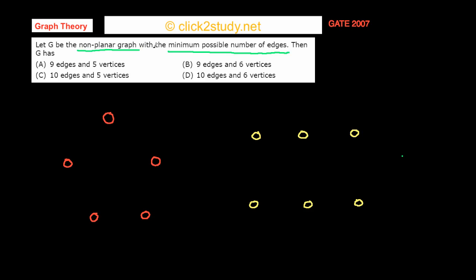The problem is: let G be the non-planar graph with the minimum possible number of edges. We are given a non-planar graph that has the minimum possible number of edges, and the question is basically asking: out of all non-planar graphs you can possibly have, tell me the one that has the minimum number of edges.